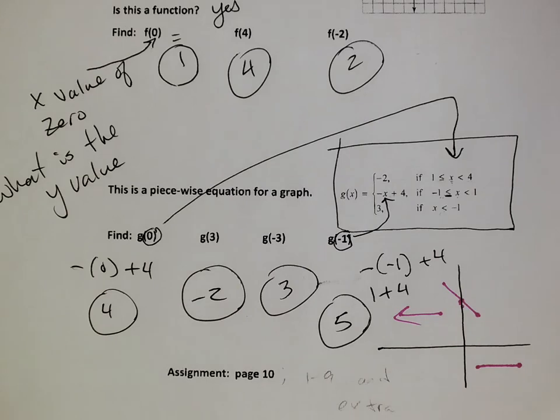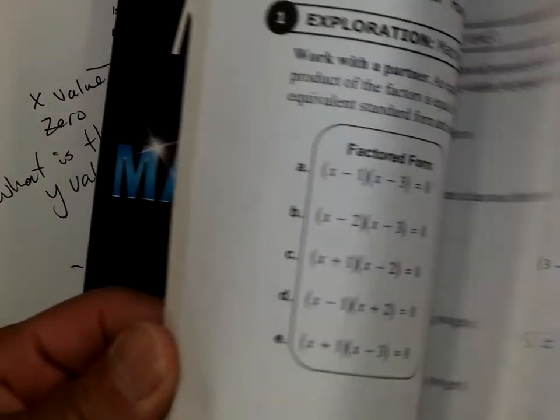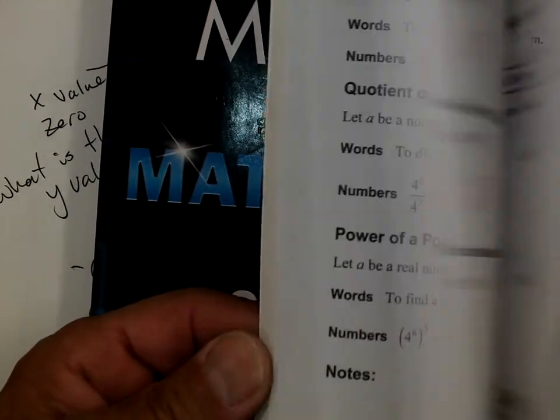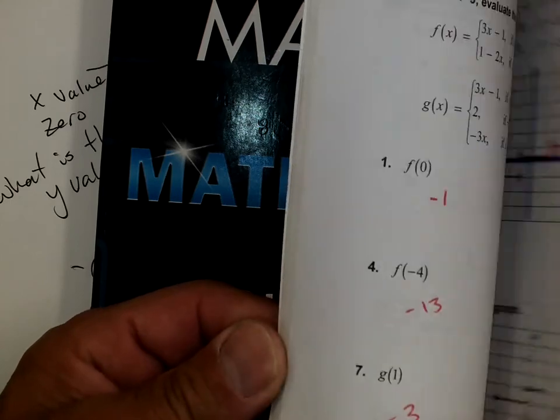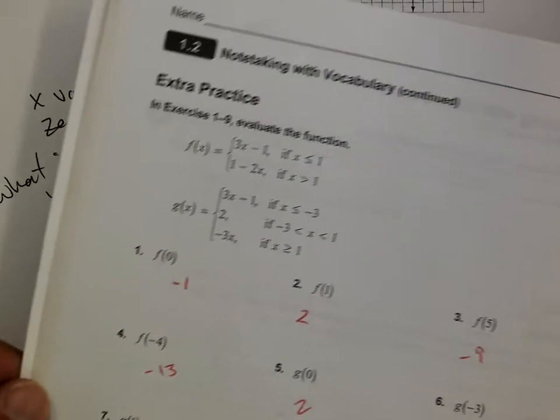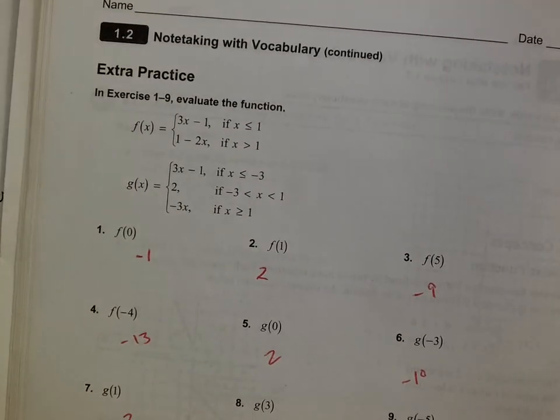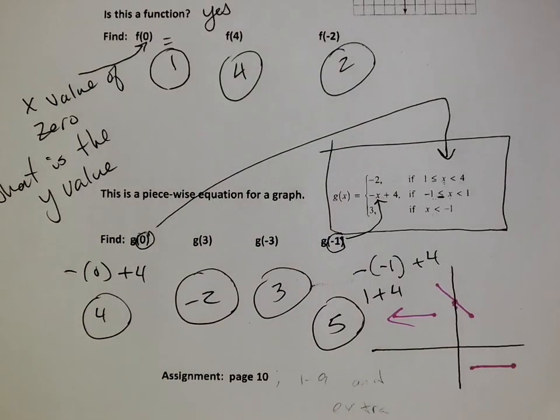So our homework today. Again, it's out of your journal. We're going to go to page ten. And I'll show you page ten. Page ten. You're going to do the one through nine all. And I will have an extra on the assignment. You'll see it. Anyway, if you have any questions, email me. Call me. Or we can zoom all of this on Wednesday.